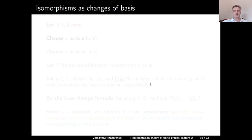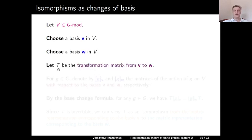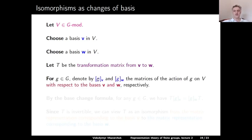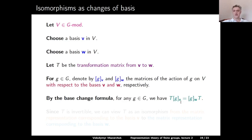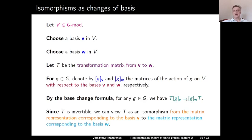Let us discuss isomorphisms of representations in terms of change of basis. Let V be a G-module with two bases V and W, and let T be the transformation matrix from V to W — an invertible matrix. For g ∈ G, denote by G_V and G_W the matrices of the action of g in bases V and W respectively. By the base-change formula, T·G_V = G_W·T for any g ∈ G. In other words, T can be viewed as an isomorphism from the matrix representation corresponding to choice V to the matrix representation corresponding to choice W.